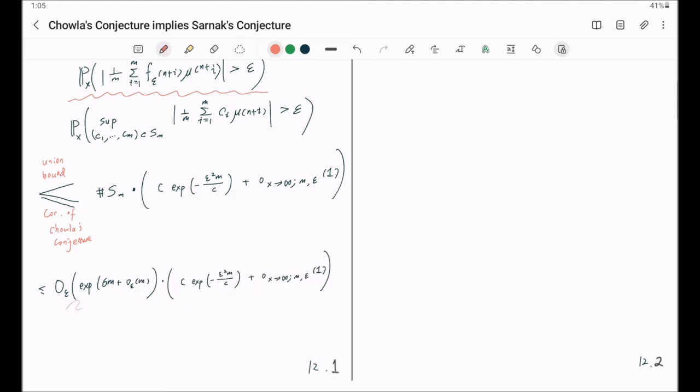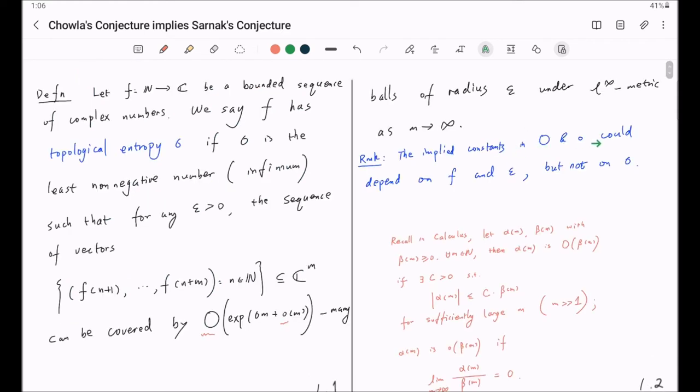This is true for any sigma greater than zero as m goes to infinity. Recall that the implied constant here only depends on epsilon as well as this F, but the implied constant does not depend on sigma. This is what I emphasized at the very very beginning. The implied constant here is not allowed to depend on sigma.